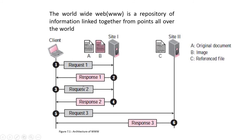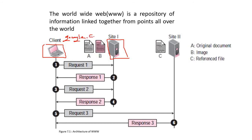What is the World Wide Web? It is a repository of information linked together from points all over the world. Whenever we access any information from anywhere in the world, we access it using the World Wide Web — like when we type google.com into a browser, it goes directly to the server.